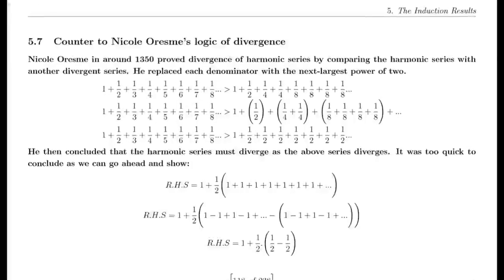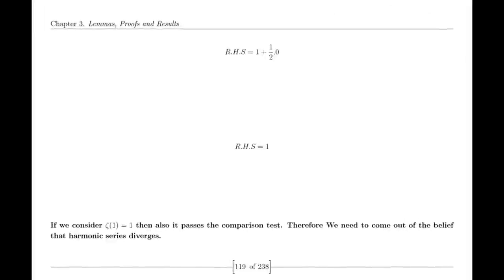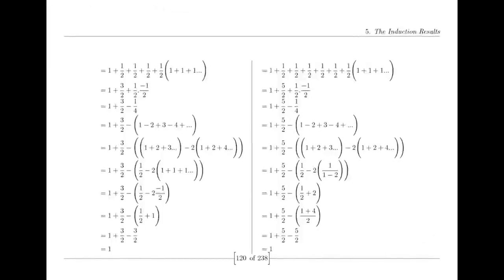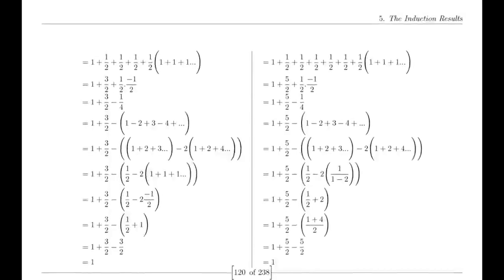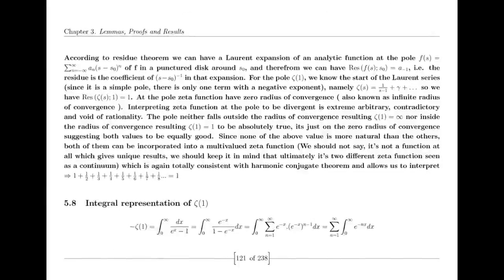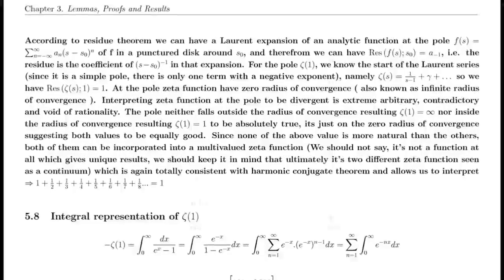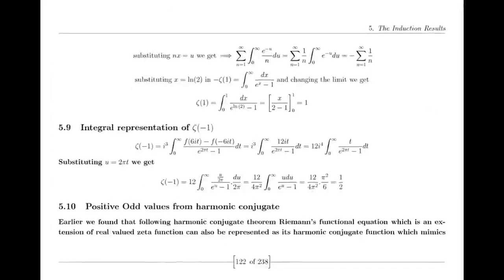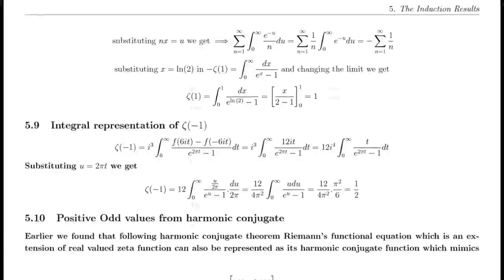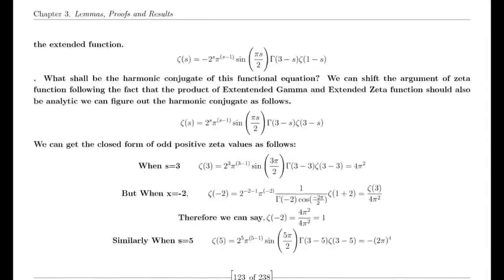In ancient Indian cosmology, the numbers 71 and 14 hold significant importance in calculating the ages of Brahma and the demigods. According to Hindu scriptures, a single day of Brahma, known as a Kalpa, is composed of 14 manvantaras. Each manvantara lasts for 71 maha-yugas — cycles consisting of four yugas: Satya-yuga, Treta-yuga, Dvapara-yuga, and Kali-yuga. Therefore, one Kalpa equals 14 manvantaras, and each manvantara contains 71 maha-yugas. This intricate system of time calculation reflects the profound understanding and conceptualization of time in ancient Indian culture.